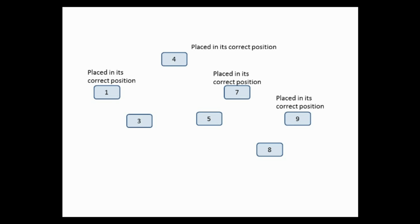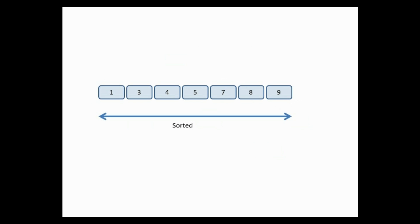We have obtained our sorted list: 1, 3, 4, 5, 7, 8, and 9. This is the sorted list obtained using quicksort. You have seen how quicksort follows the divide and conquer approach. I will explain its algorithm in my next video — you can find the link in the description box below. If you have any queries, please comment. Thank you for watching; if you liked it, please press the like button and don't forget to subscribe.